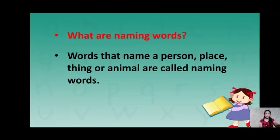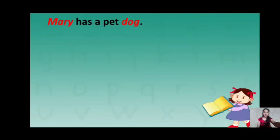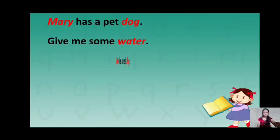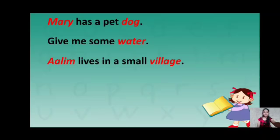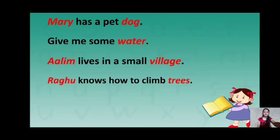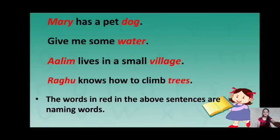Now, let us read the sentences given in your textbook page number 1. Mary has a pet dog. Give me some water. Alim lives in a small village. Raghur knows how to climb trees. The words in red in the above sentences are naming words.